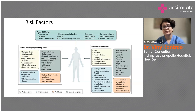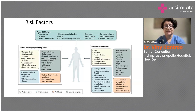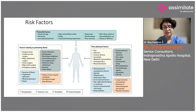High comorbidity burden — multi-organ involvement such as diabetes with vascular complications, coronary artery disease, renal failure (CKD), chronic liver disease, or chronic respiratory failure such as interstitial lung disease leading to hypoxia — are all risk factors that can precipitate delirium early in the ICU.